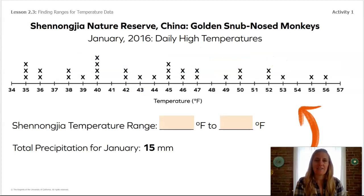Here is our last set of data for a nature reserve in China. This is the home of the snub-nosed monkeys. If you look at the range for this primate, what do you notice?